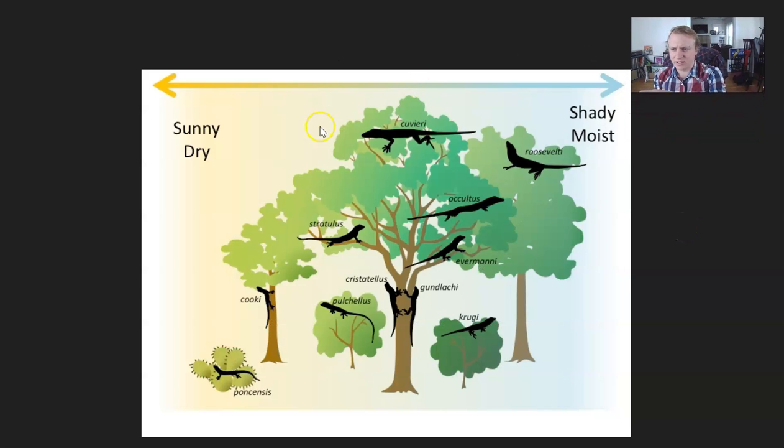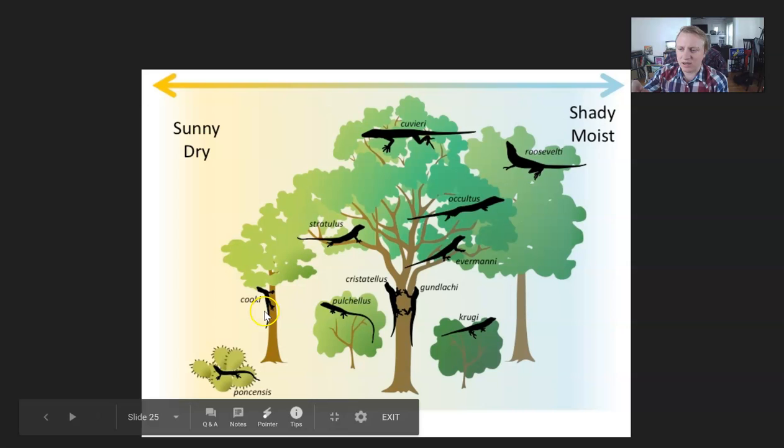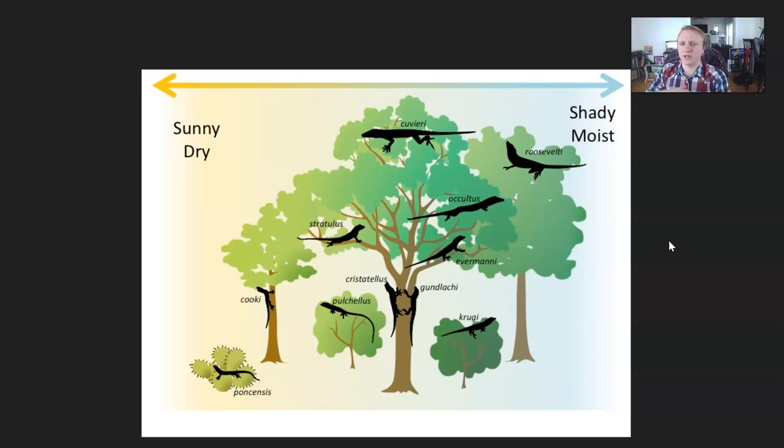Another example is these lizards. This is in your reading this week. These are very closely related lizards. They're all closely related to one another. And they have diversified to use different areas of the same environment. And so you have these lizards up at the very top, and you'll have these lizards sort of in the branches, and these lizards are on nearby plants. So this is just an example of resource partitioning.